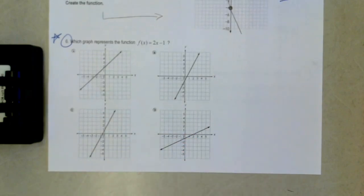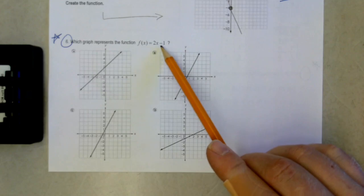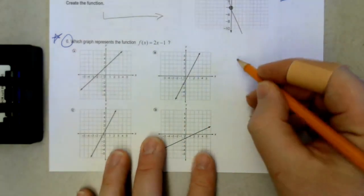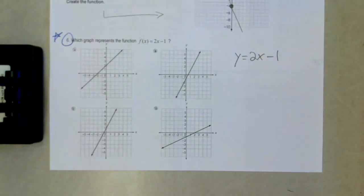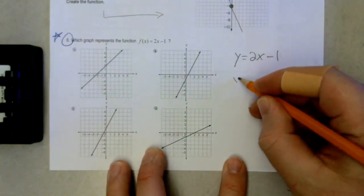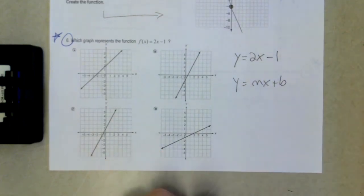Multiple choice. Here we go. Which graph represents the function f of x equals 2x minus 1? That's just the same thing as y equals 2x minus 1. f of x and y are interchangeable. So this equation right here is in slope-intercept form.